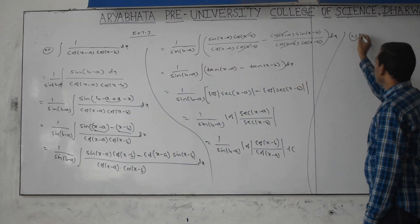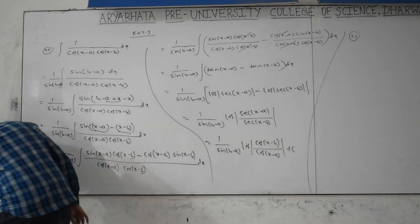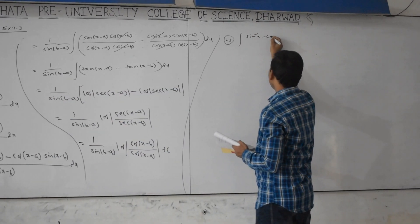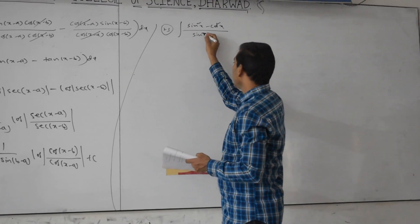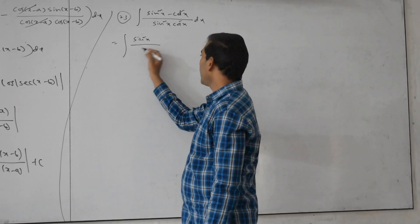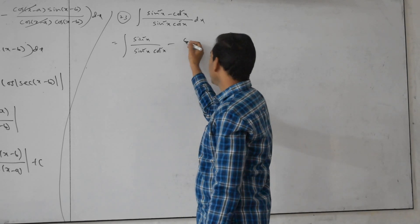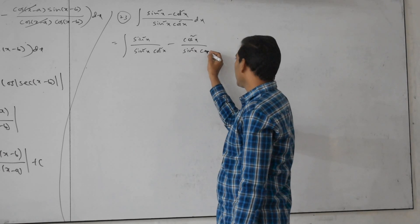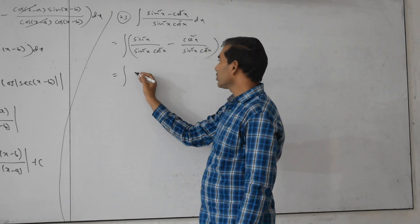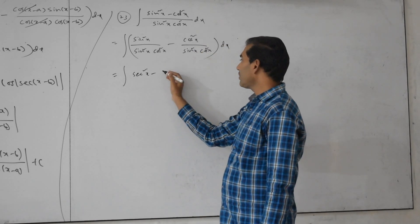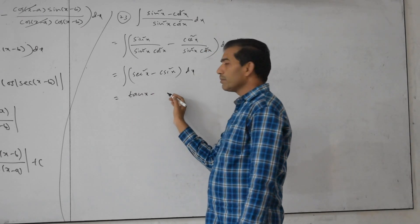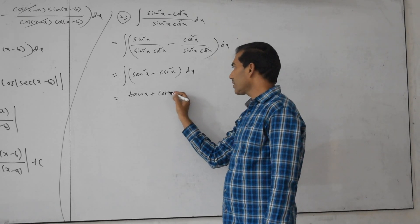Next question: integration of (sin²x minus cos²x) divided by sin²x into cos²x dx. Split: sin²x by (sin²x into cos²x) minus cos²x by (sin²x into cos²x). This gives 1 by cos²x which is sec²x, minus 1 by sin²x which is cosec²x dx. Integration of sec²x is tan x, minus integration of cosec²x gives plus cot x plus c.